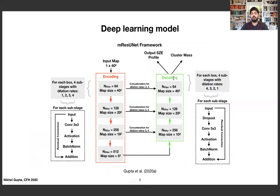Quickly on the deep learning model: I'm using a ResUNet-type framework, which is an encoder-decoder paradigm. It has several convolution layers with activation functions after every convolution, batch normalization, and residual connections. Several convolution layers have different dilation rates — one, two, three, or four — with proper window functions and concatenations between the encoding and decoding phases. Dropout layers are also used to prevent overfitting. For more details about the model, feel free to write me an email or check the paper.